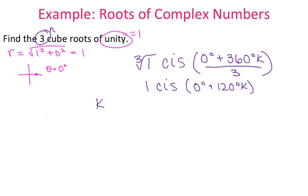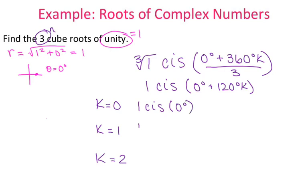Now I list out my k values. I start with k equals 0, then k equals 1, then k equals 2 — stopping there because I want three cube roots of 1. Plugging in k=0 gives cosine i sine of 0. Plugging in k=1 gives cosine i sine of 120 degrees. Plugging in k=2 gives cosine i sine of 240 degrees.